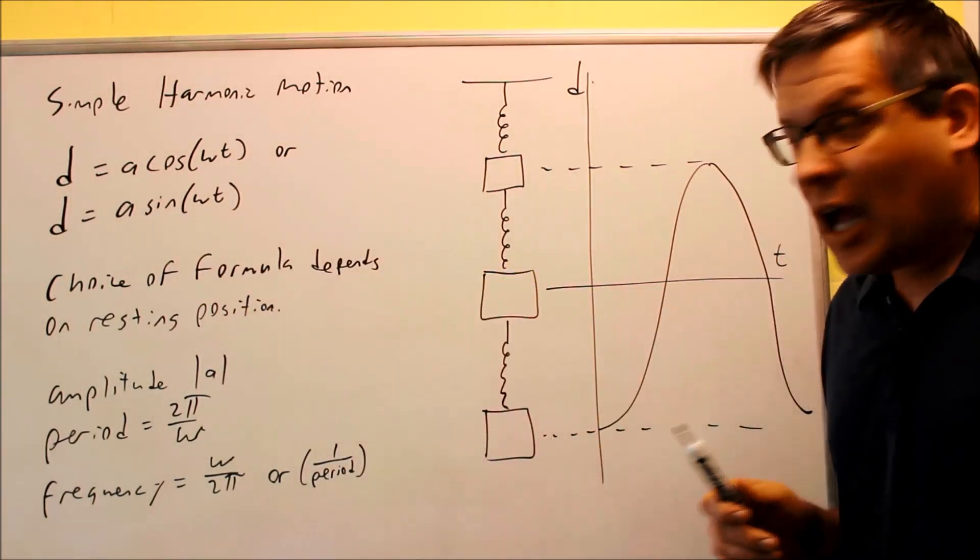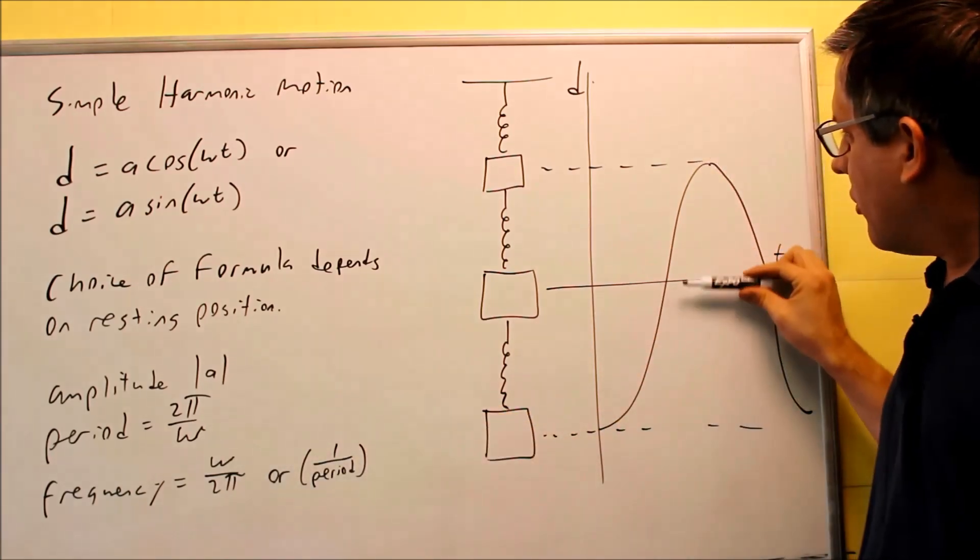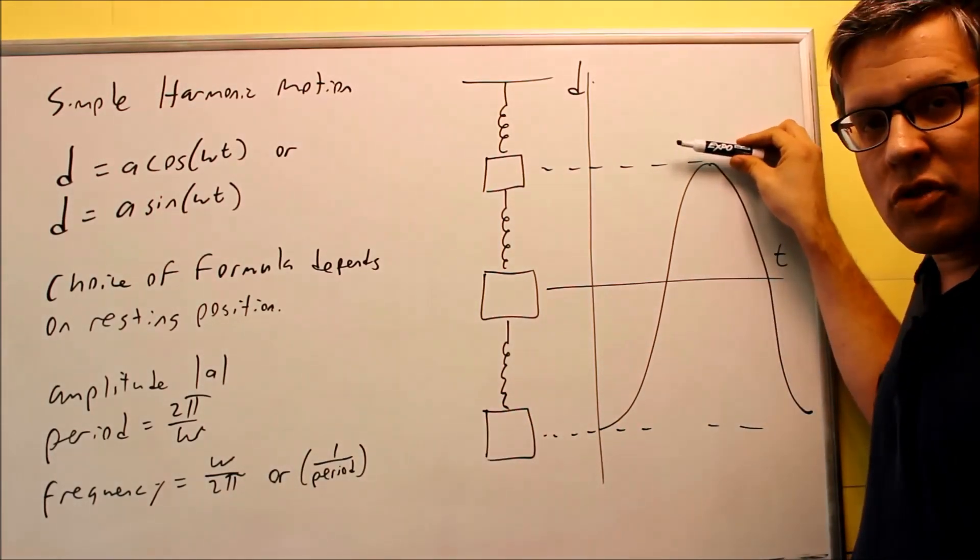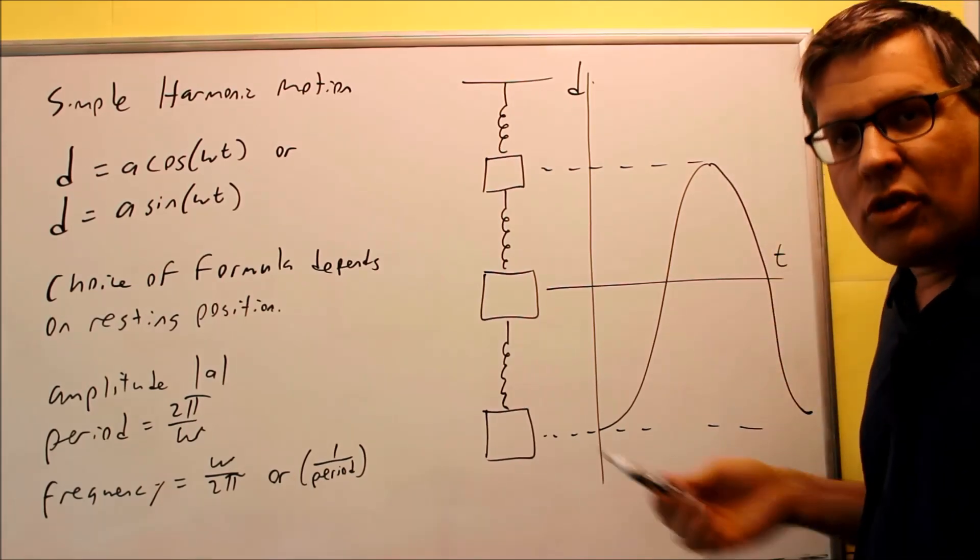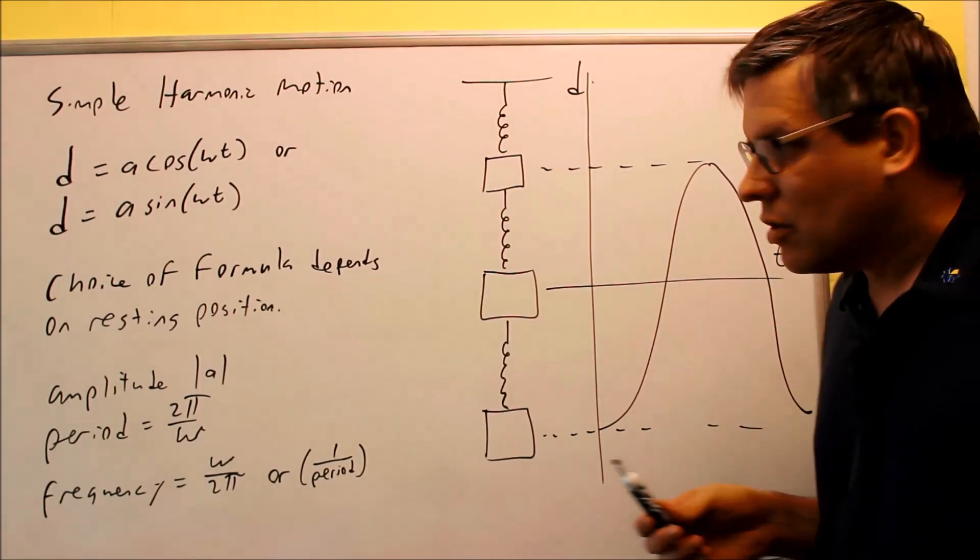So the a represents the amplitude. That would tell you what the furthest away it comes. It will go to here or go down to there. This distance right here would be your amplitude as we talked about before in the graphing session.